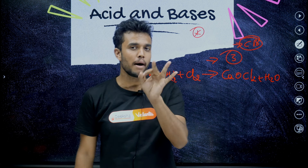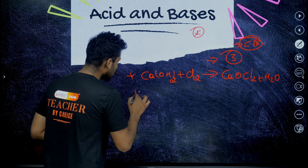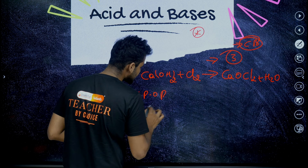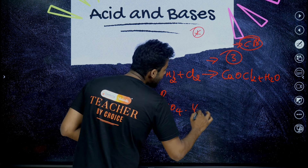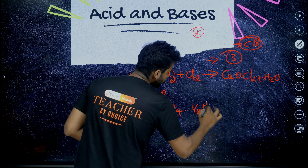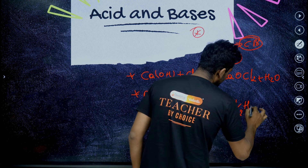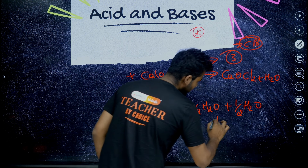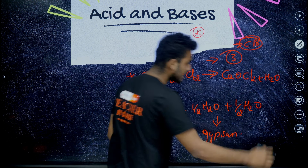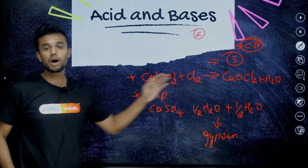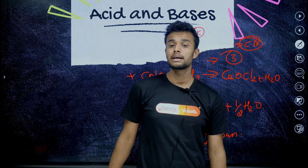The second important reaction is plaster of paris from gypsum. The molecular formula of plaster of paris (POP) is CaSO4·½H2O. If we react this molecule with ½H2O, it gives gypsum. These two reactions — bleaching powder and plaster of paris — are very very important from the acids and bases unit.